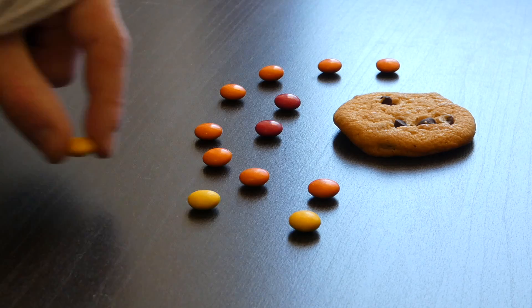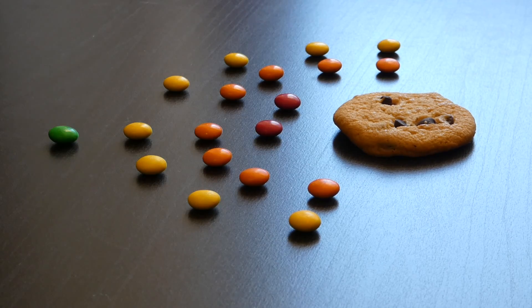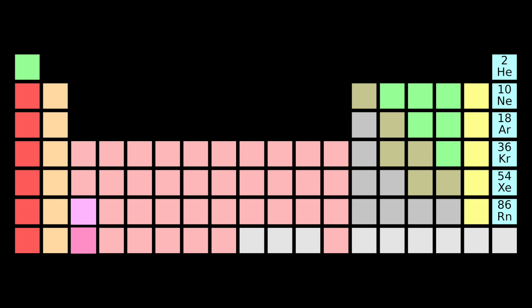For the next ten we can move a bit quicker, because they share very similar properties to those already described. You can see this on the periodic table. Elements arranged in vertical columns have similar properties, because they have the same number of electrons in their outermost shell.